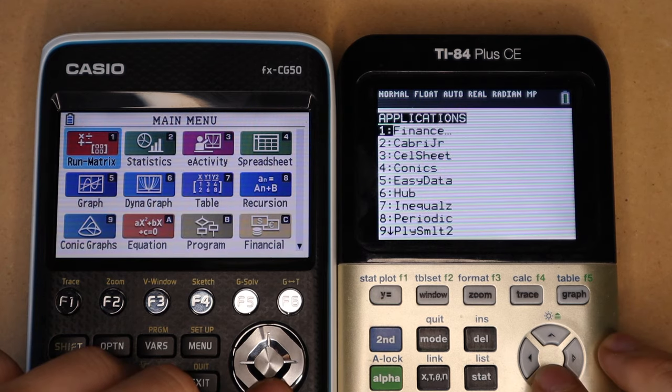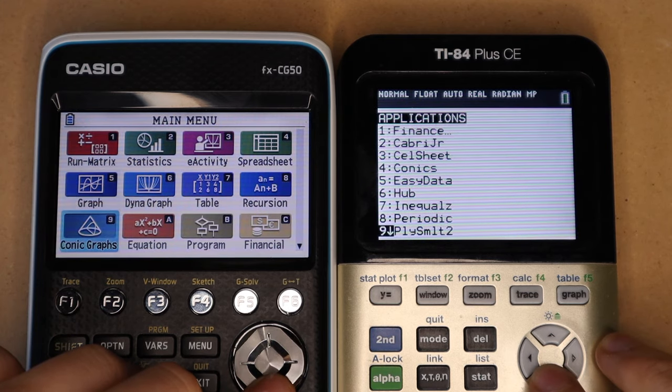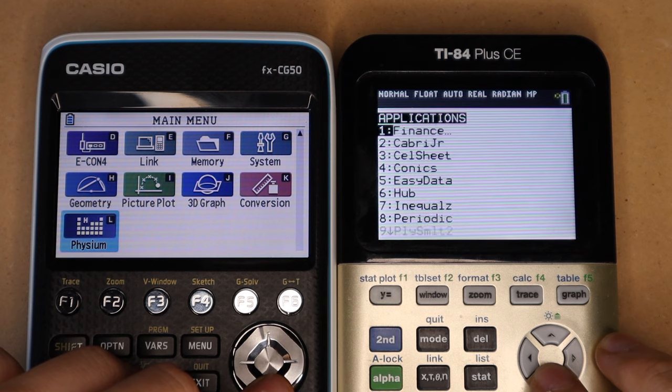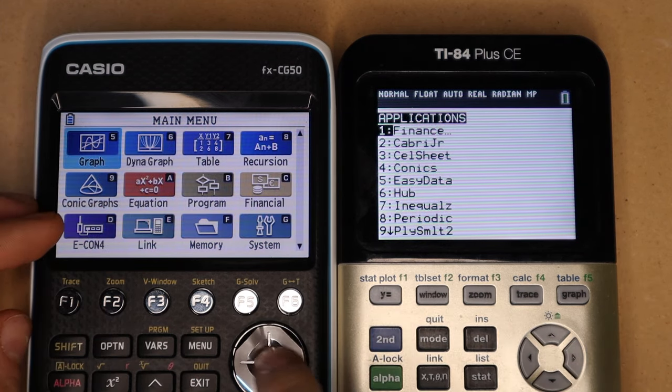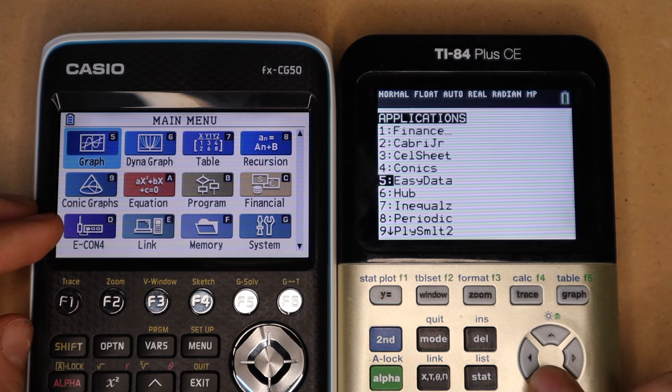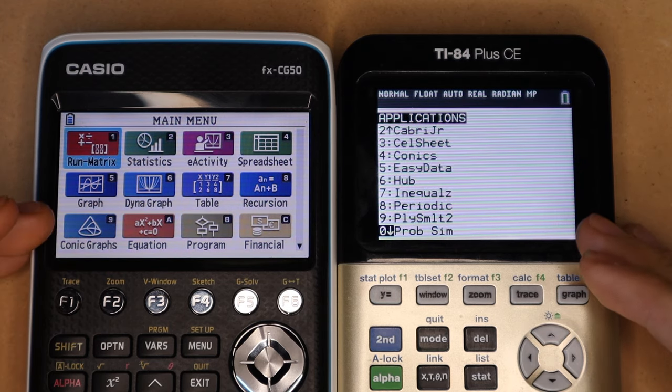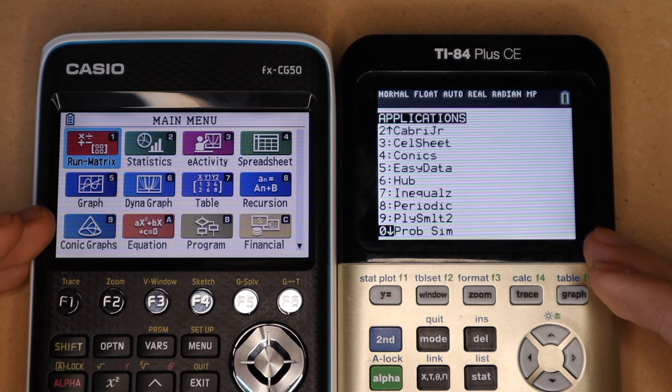So again, both calculators have a lot of things in common. Here are the respective screens with the different apps that each calculator has. Here on the Casio, you get this nice visual colored menu, and then on the TI-84 Plus, you get a list here.